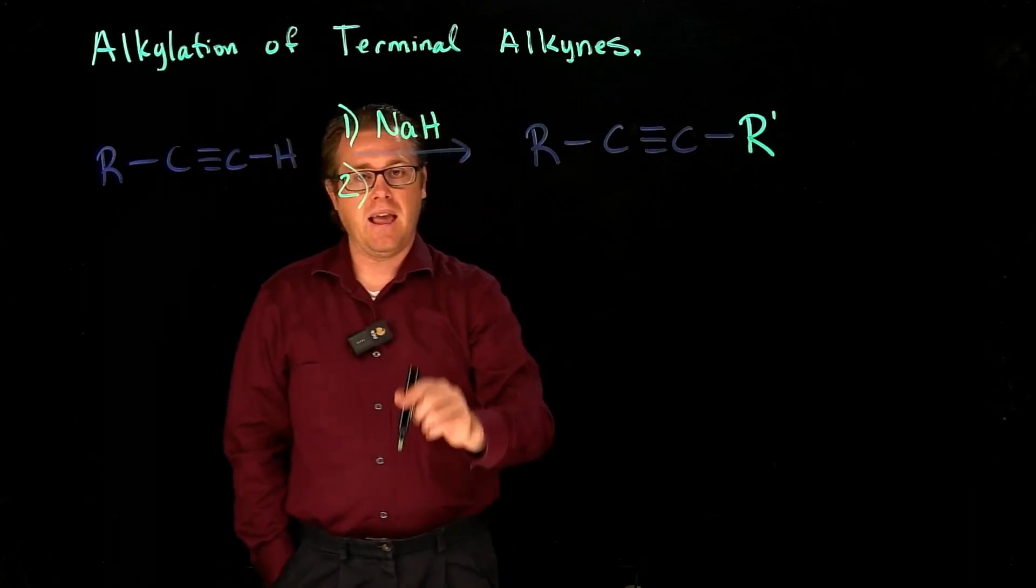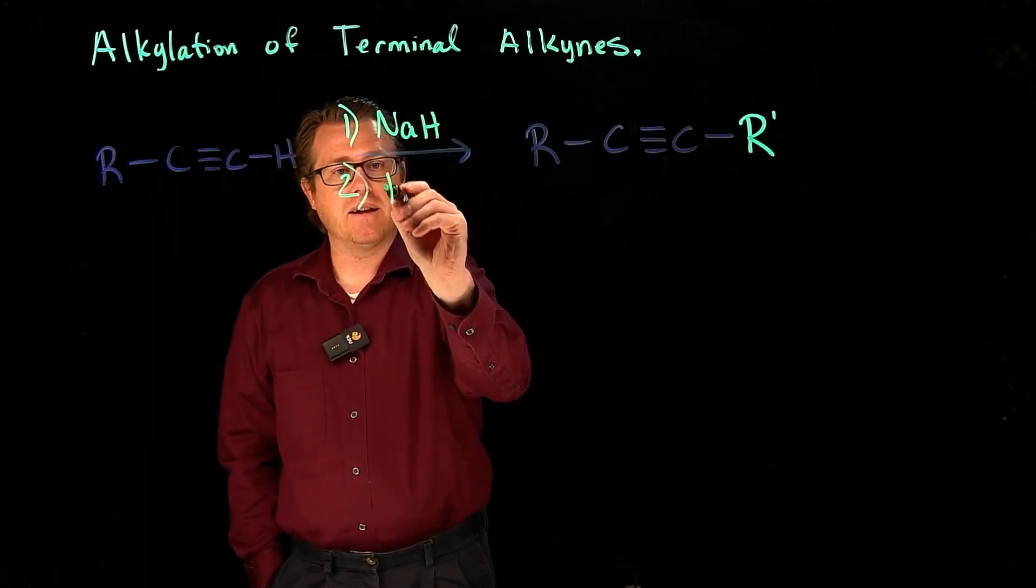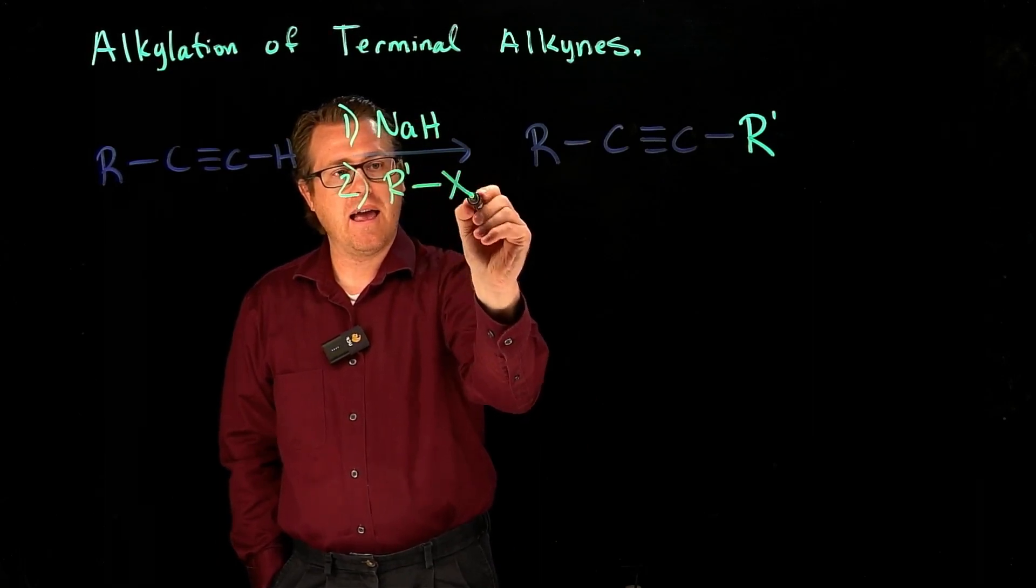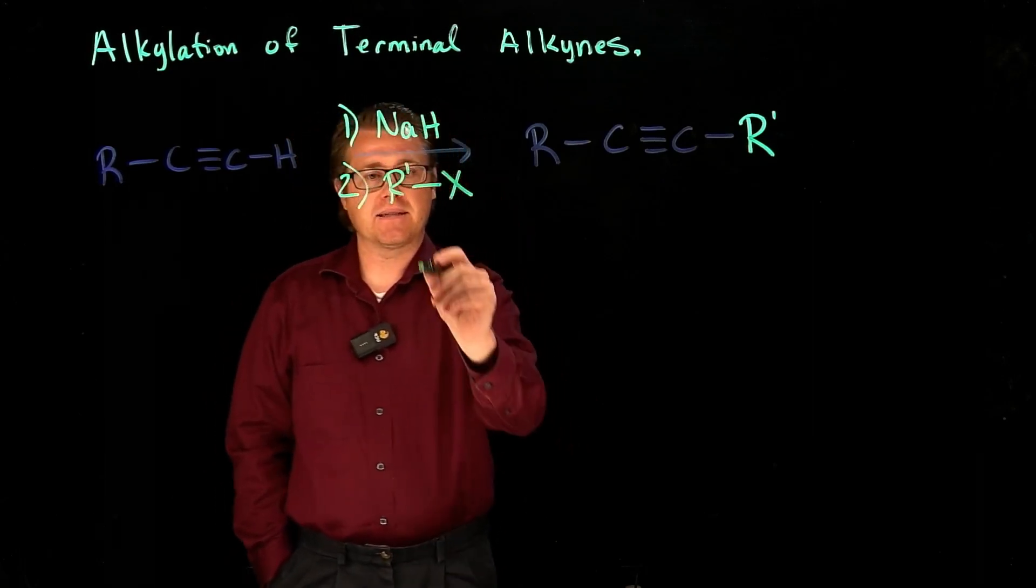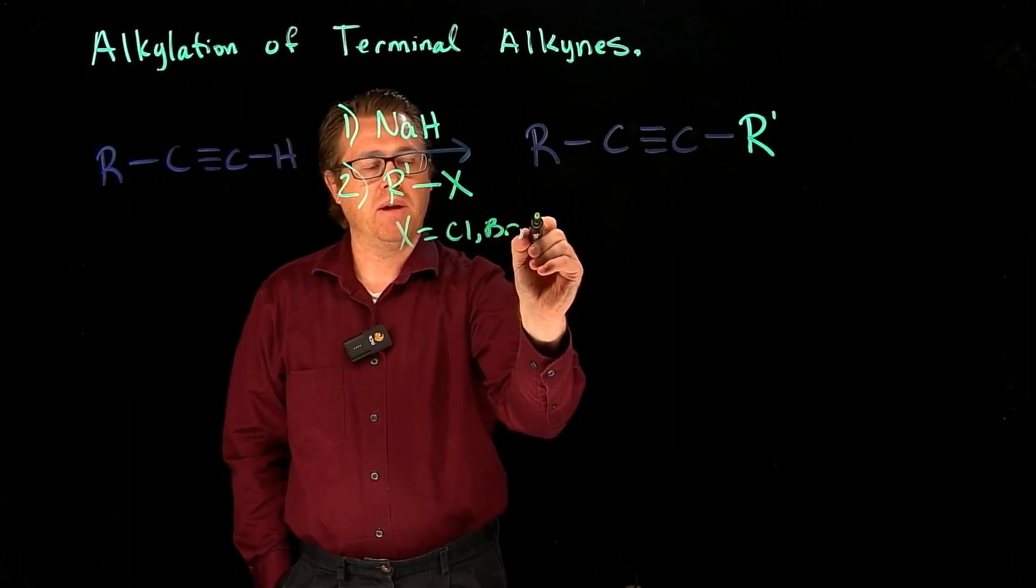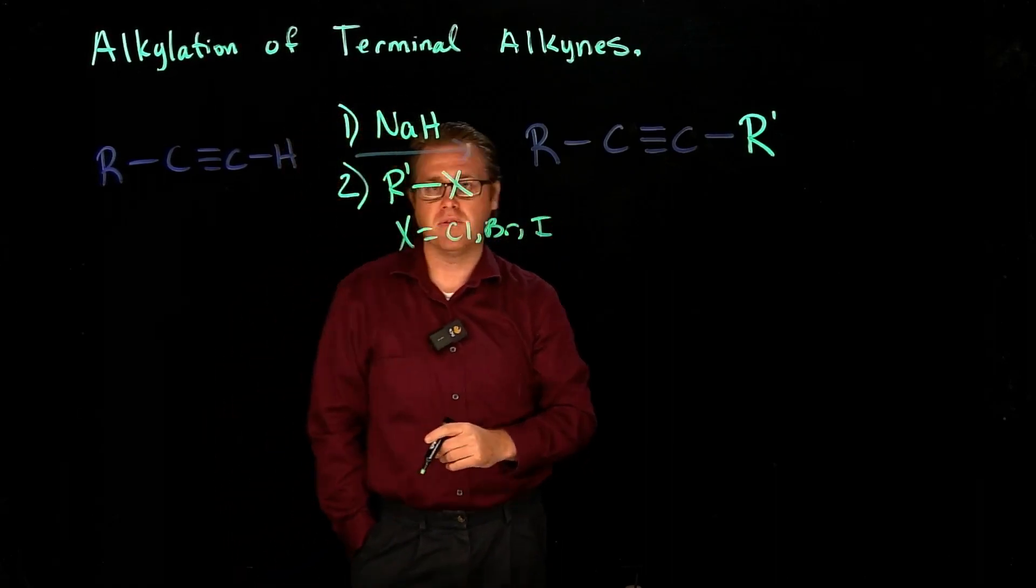you're going to treat that with an alkyl halide. So R1, X. Now, X can be chlorine, bromine, or iodine, not dealing with fluorine.